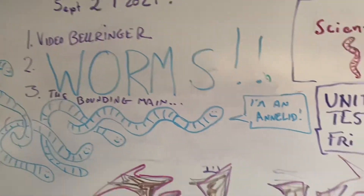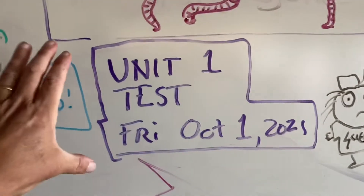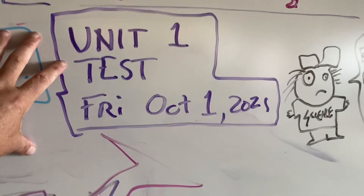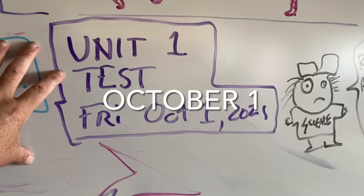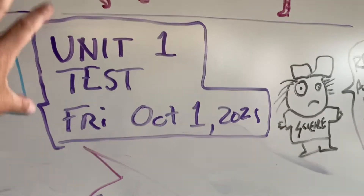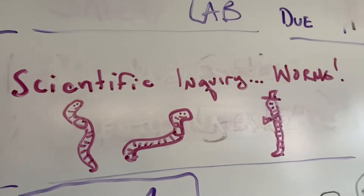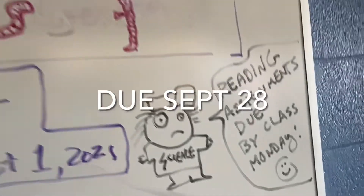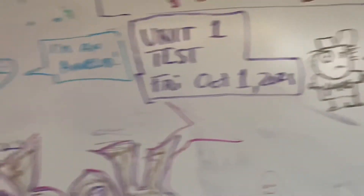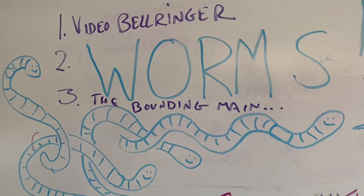A quick reminder: our first unit test is going to be Friday, October 1st — not this Friday, but the week after. The worm lab is going to be due at the beginning of next week. And of course, you always are reading, and readings are week to week.